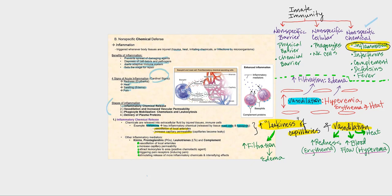There are four stages of inflammation: first, inflammatory chemical release; second, vasodilation and increased vascular permeability; third, phagocyte mobilization, chemotaxis and leukocytosis; and fourth, the delivery of plasma proteins.